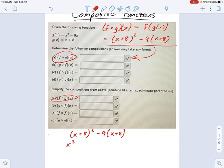So on the left, we have x squared plus 16x plus 64. On the right, we have minus 9x minus 72.